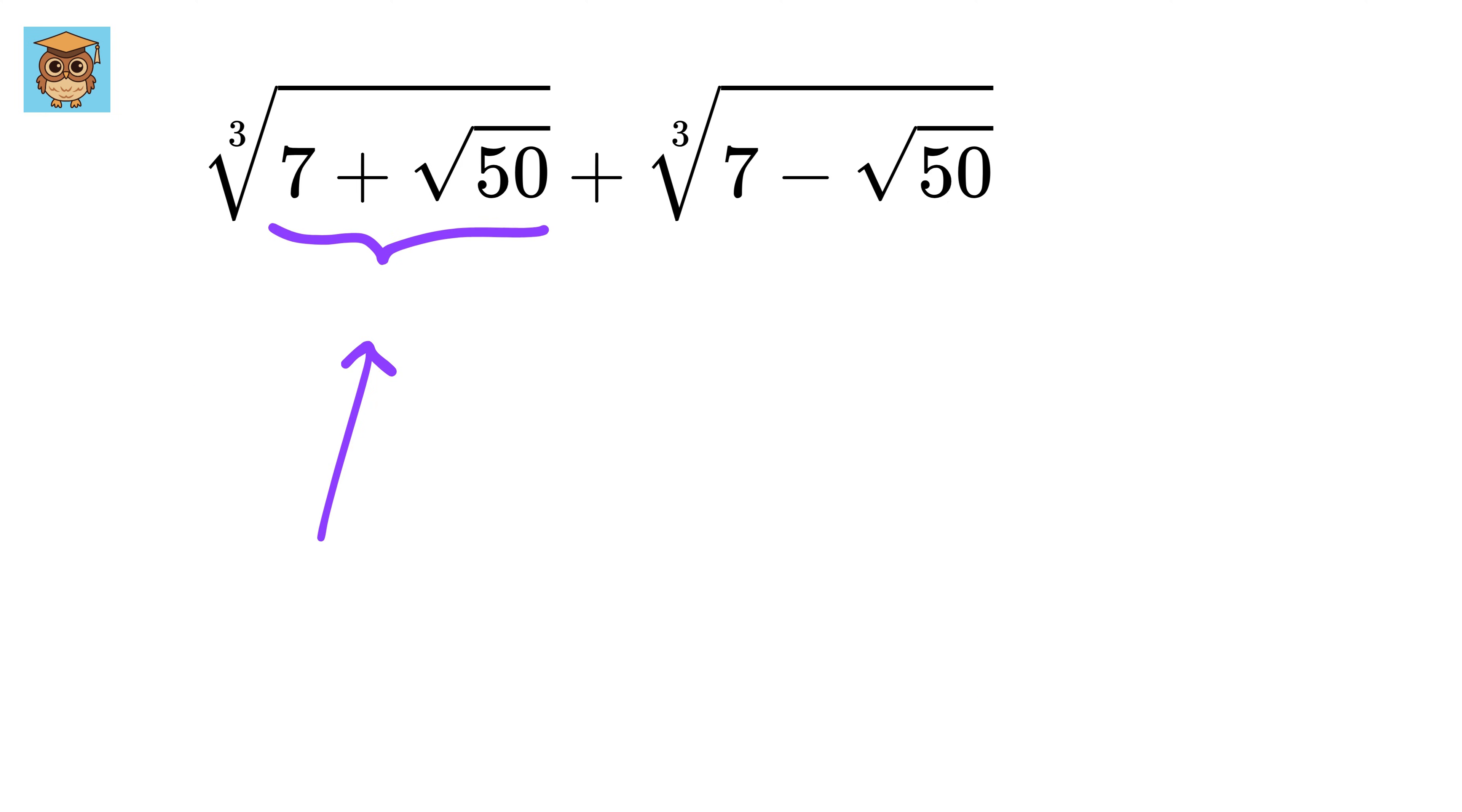Let us call this value as A and this as B, which is the square root conjugate of A. Both the cube root of A and the cube root of B are real. Therefore, their sum will also be real.